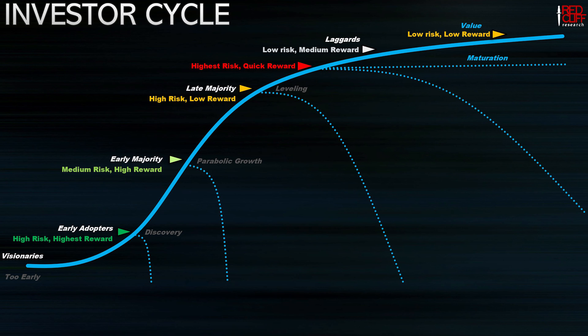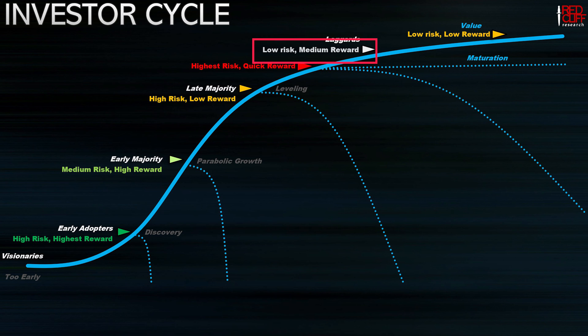Save the high risk, quick reward trades for day trading and be very careful — don't go into that scenario trying to be an investor, that's a day trader's game. At the top of the cycle you have laggards: low risk but medium reward. These would be companies like Adobe and Apple, which are probably reaching maturation. Apple might become a value stock soon, although if they get into the EV market definitively, that innovation layer could reset the whole cycle. At their current market cap it's pretty incredible that they're still growing at this rate.